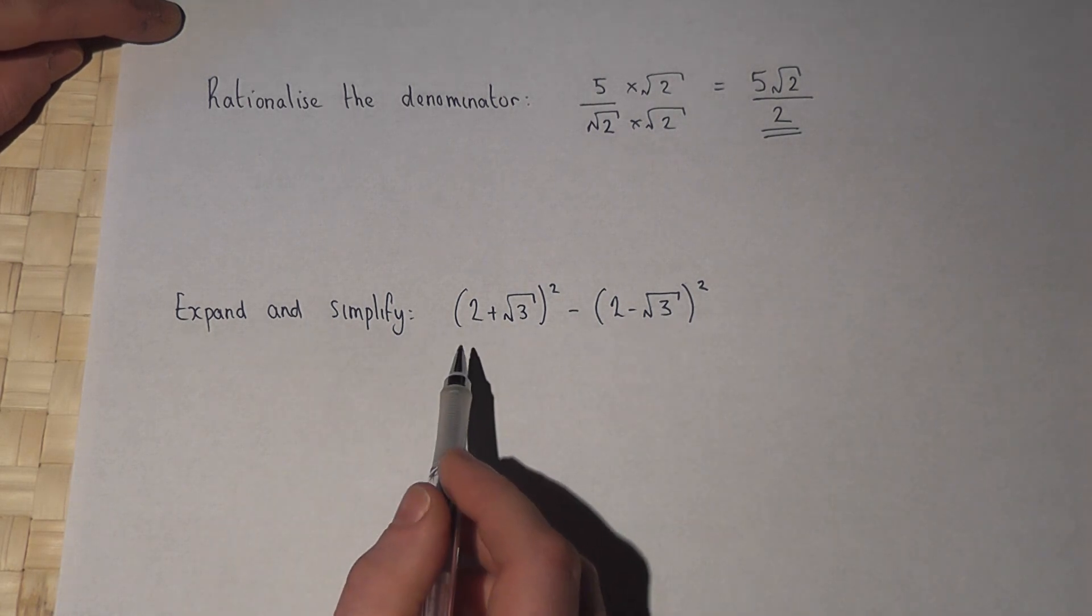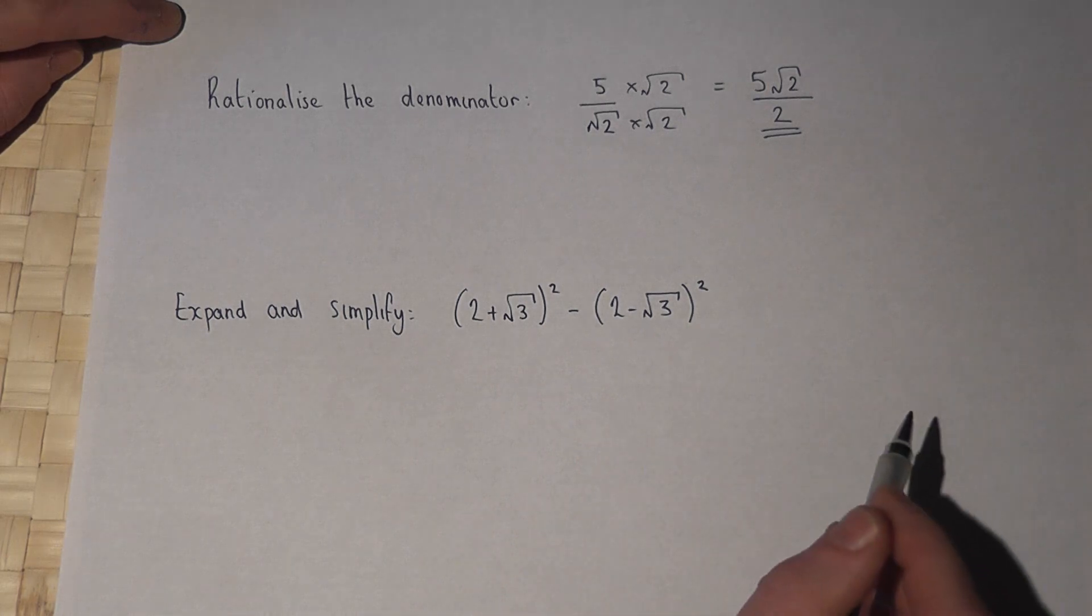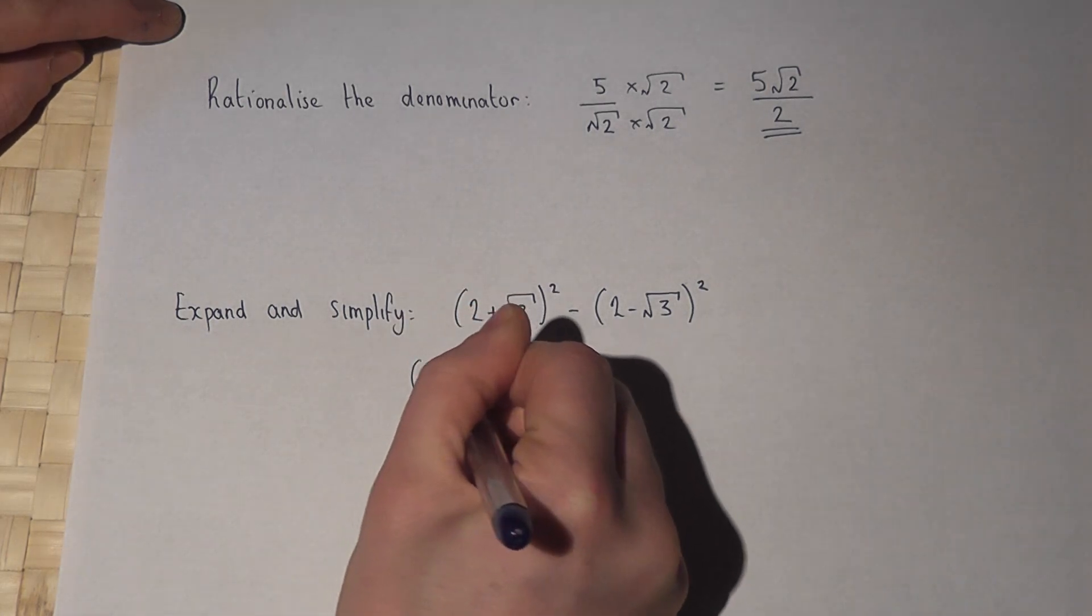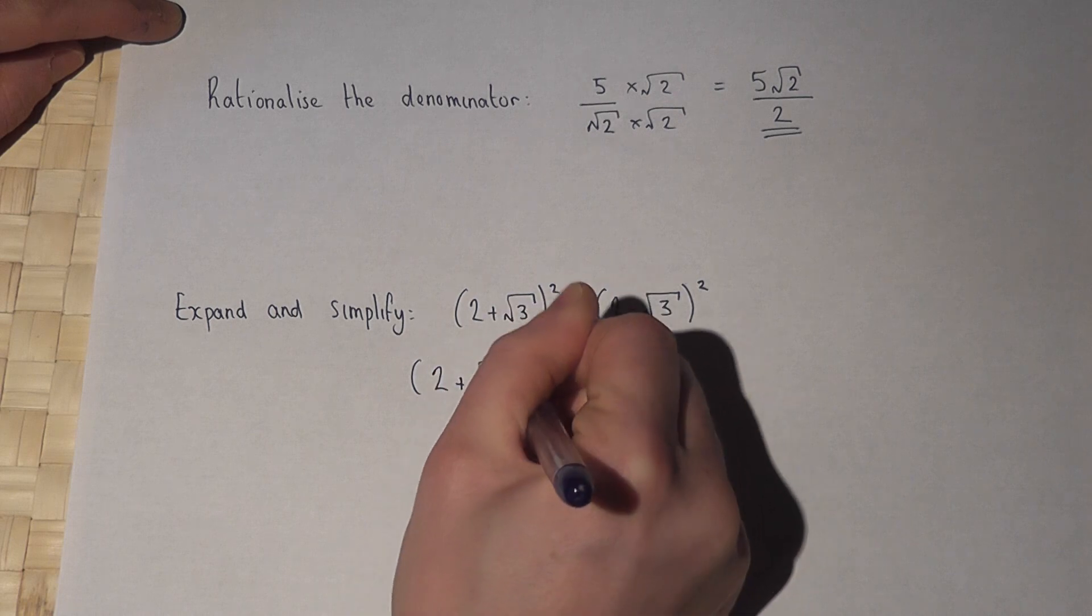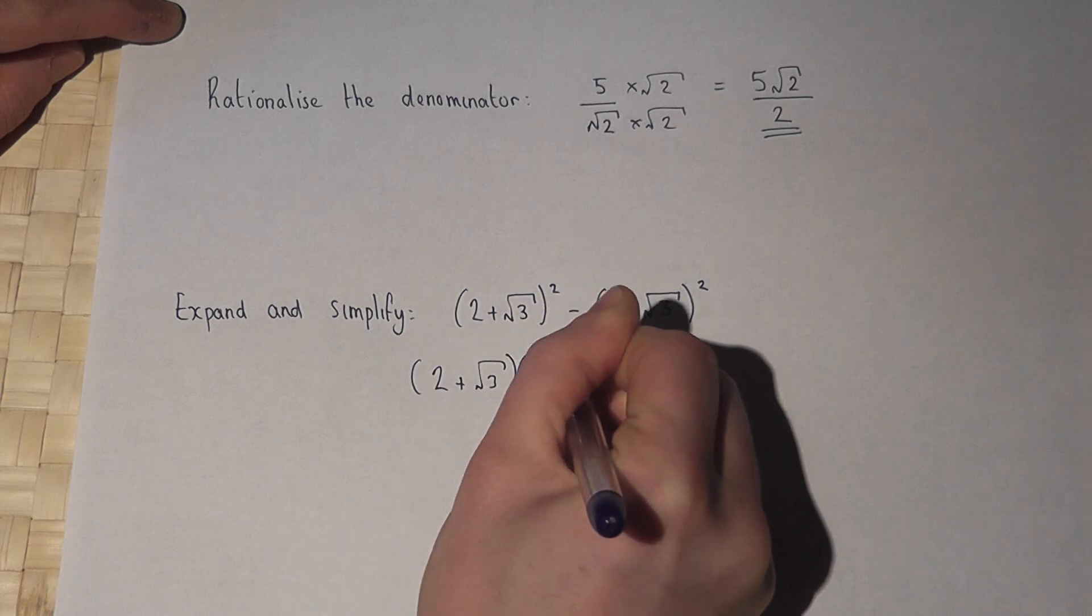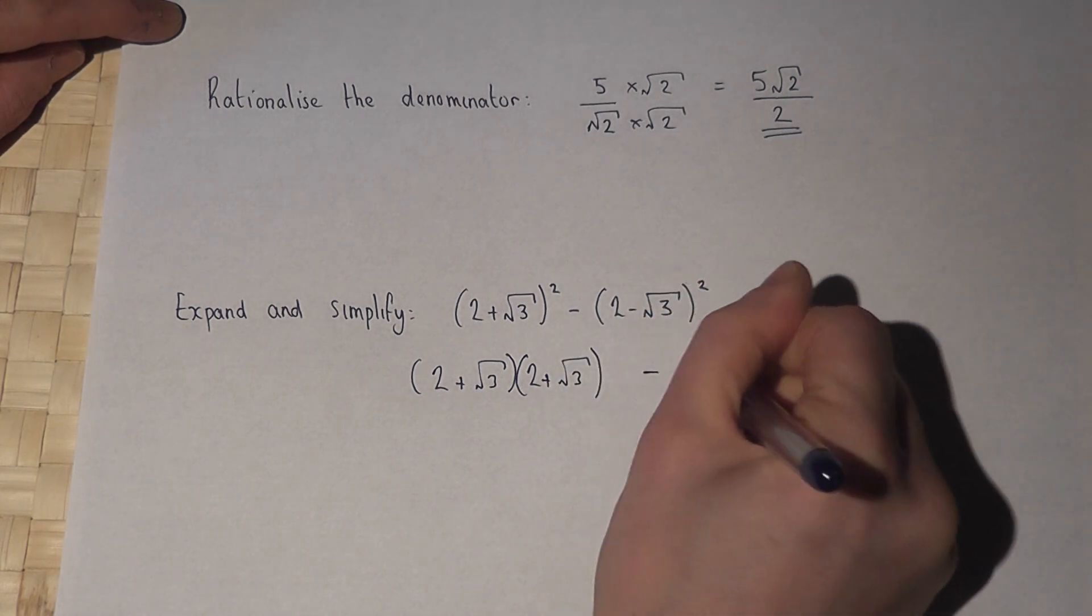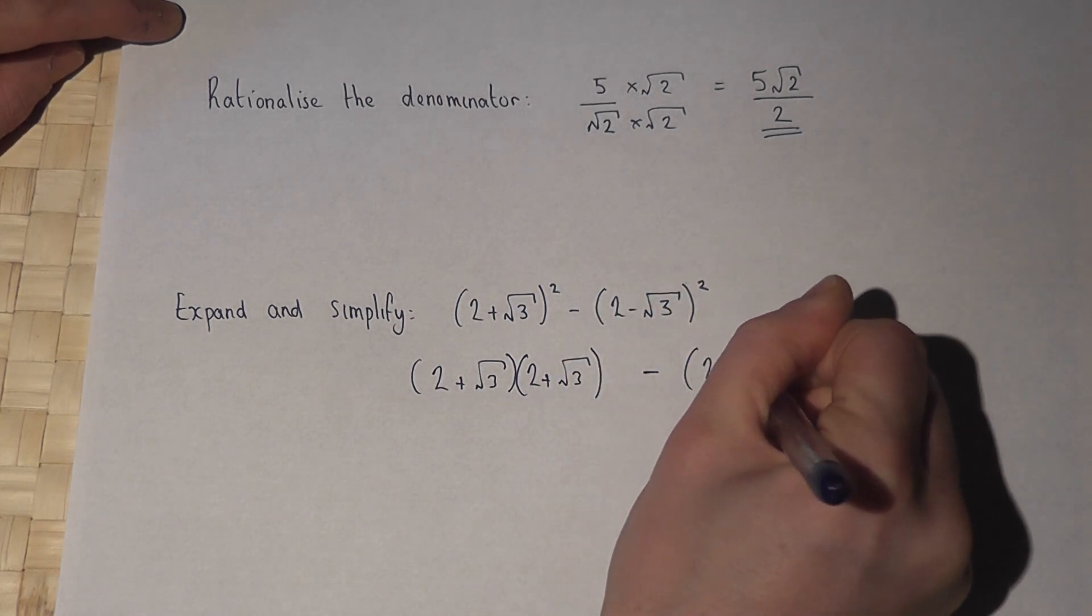Now in part 2 we're asked to expand and then simplify this expression here. Now a square just means the same bracket times by itself. So we have to work out that, take away this.